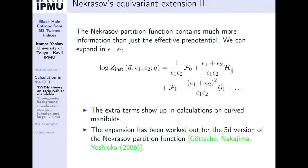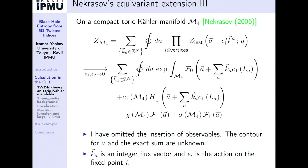The Nekrasov partition function contains a lot more information. Even in the limit where epsilon_1, epsilon_2 go to 0, it contains more information than just the effective pre-potential in flat space. This is an expansion in epsilon_1 and epsilon_2, and the extra terms H_1, F_1, and G_1 show up in calculations on curved manifolds. This expansion has been worked out in five dimensions for the five-dimensional Nekrasov partition function. This is Nekrasov's conjecture for what the partition function on a Toric-Kahler manifold would look like — not a localization calculation — and the sum over fluxes K and the contour integral were not specified in the paper.